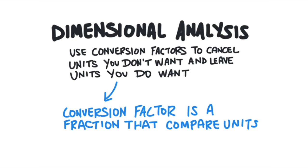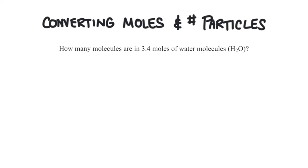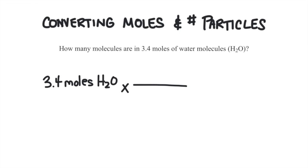We are going to use a system called dimensional analysis to perform these conversions. Dimensional analysis uses conversion factors that will cancel out the units we don't want and leave us with the units we do want. Conversion factors are fractions that compare two units to each other. Here's how it works: how many molecules are there in 3.4 moles of water molecules? To use dimensional analysis, we first write the given quantity, 3.4 moles. Next, we multiply it by a conversion factor that compares the new unit to the old unit.